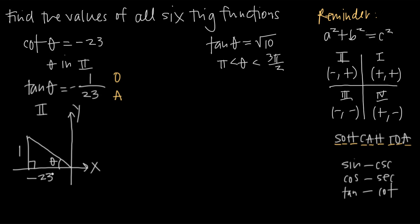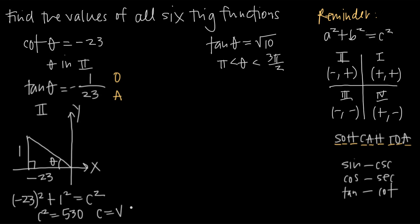With two sides of the triangle known, we use the Pythagorean theorem to find the hypotenuse. Negative 23 squared plus 1 squared equals c squared. That gives us 529 plus 1 equals 530, so c squared equals 530 and c equals the square root of 530.